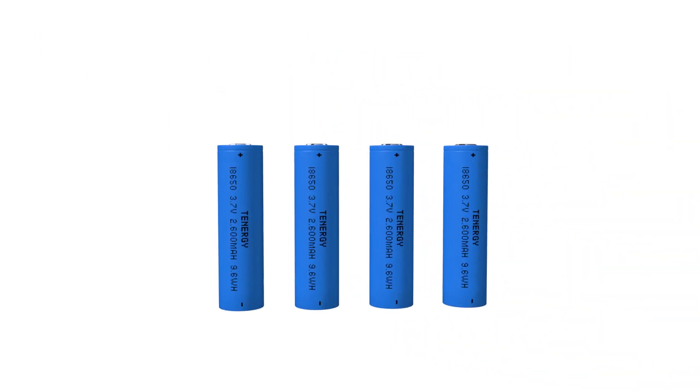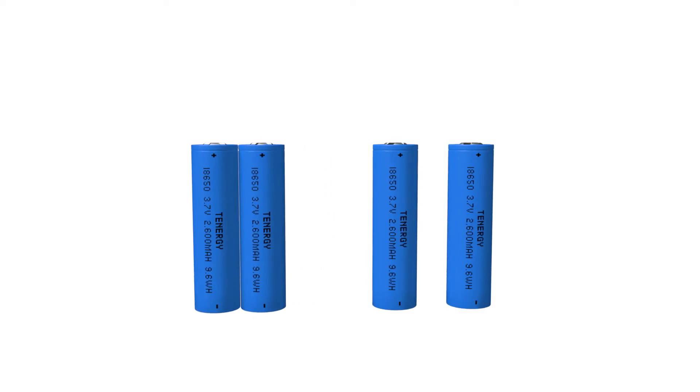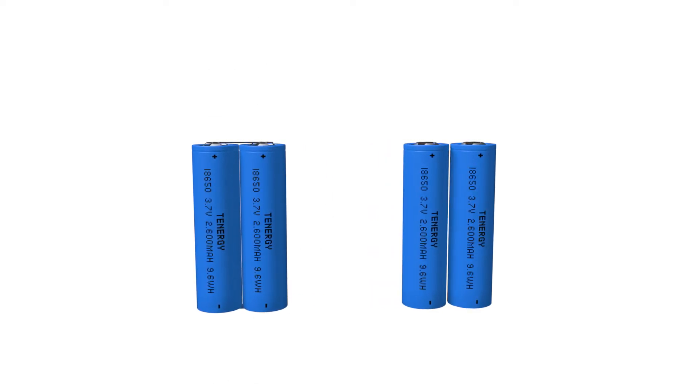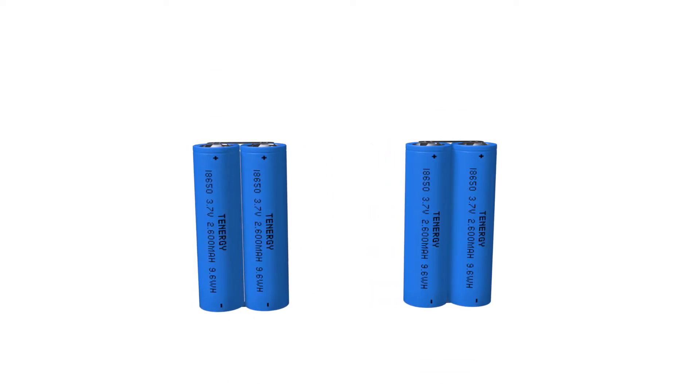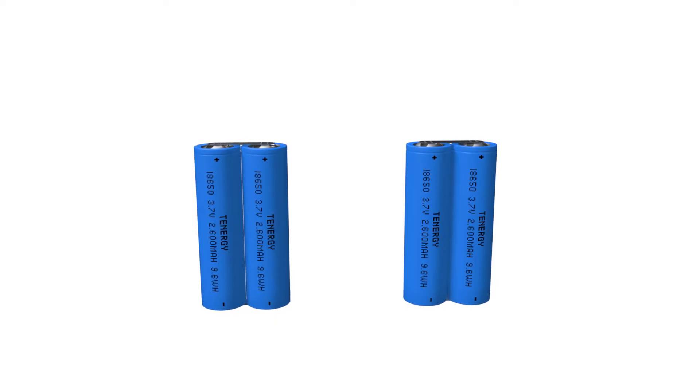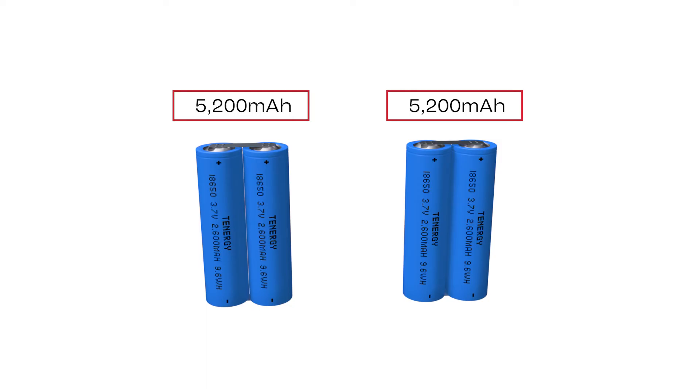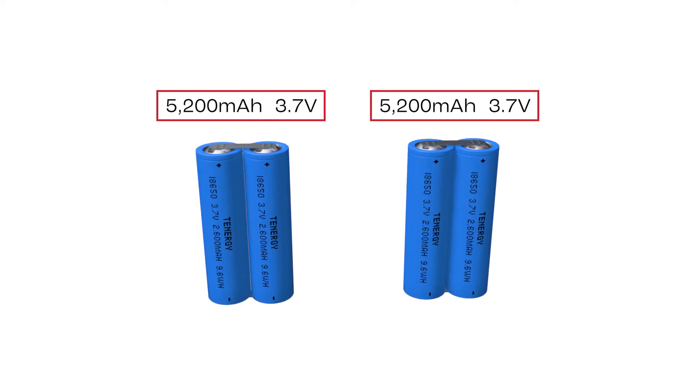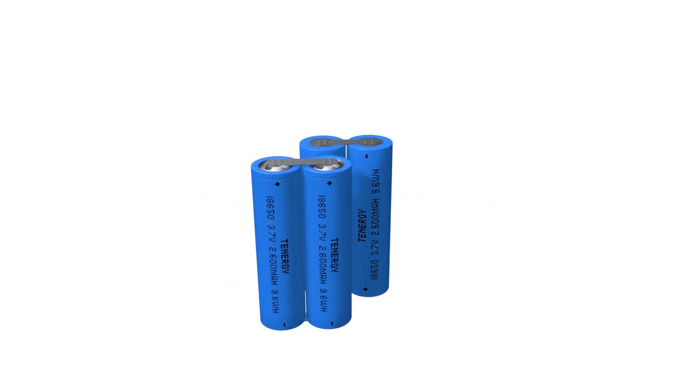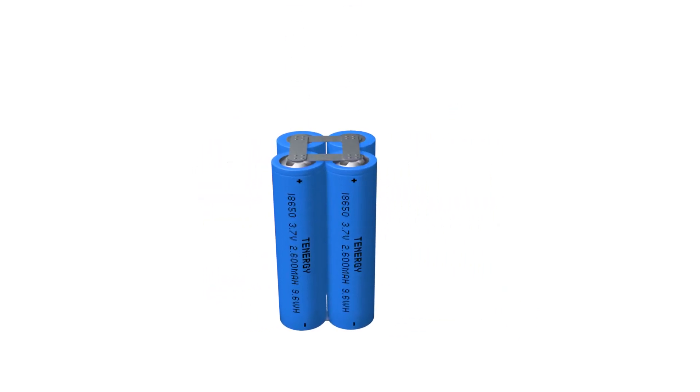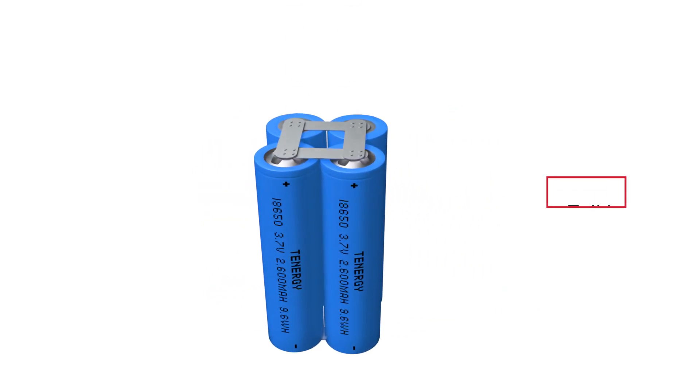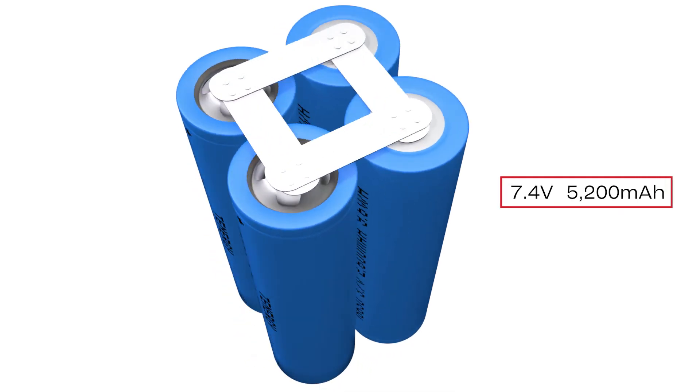Let's use these cells again for our example. I'll take these two and connect them in parallel. I'll do the same for these two. We'll get two groupings of cells in parallel with each having a capacity of 5200 milliamp hours. And because it's in parallel, their voltage remains the same, which is 3.7 volts. Then I'll connect these two groups in series. We'll get a battery pack with a total voltage of 7.4 volts and 5200 milliamp hours.